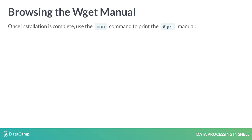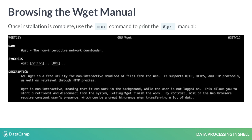Once installation is complete, use the man command to print the wget manual. Remember to press Enter to scroll and to press q to exit.